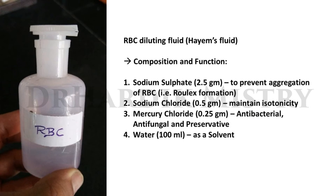RBC diluting fluid, or Hayem's fluid — composition and function. It contains sodium sulphate 2.5 g, which prevents aggregation of RBC or rouleaux formation; sodium chloride 0.5 g, which maintains isotonicity of the fluid; mercuric chloride 0.25 g, which acts as antibacterial, antifungal, and preservative; and water 100 ml, which acts as a solvent.